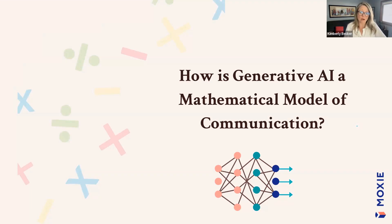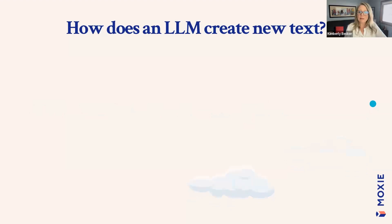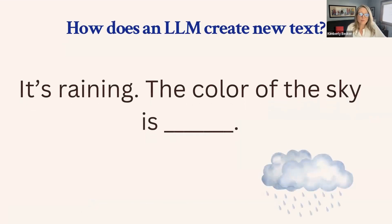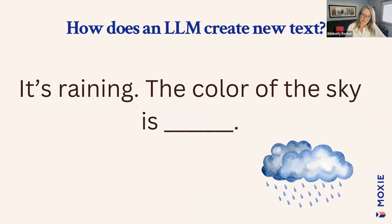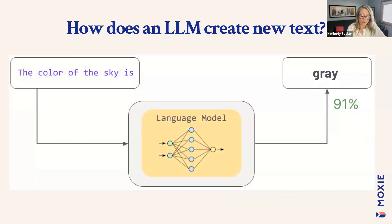It's really just a mathematical model of communication. The phrase I really like is a word calculator, or a language calculator. The way it works is it basically predicts the next word based on context. If you start with 'the color of the sky is blank,' the model predicts the most likely word — probably 'blue.' However, if we add context like 'it's raining,' then the color of the sky is much more likely to be 'gray' or 'dark.' So really, it's just a predictive model — a calculator of language.